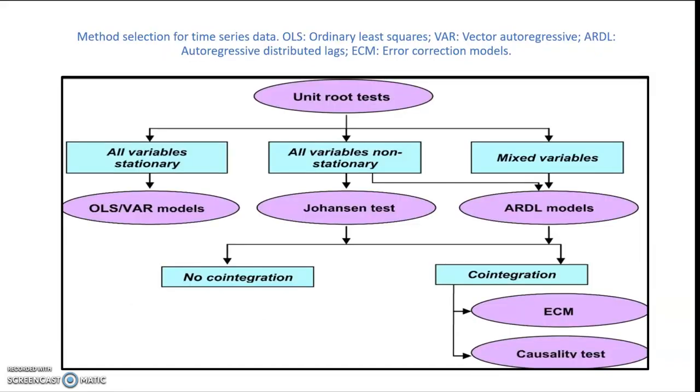In this slide you see that the starting point in time series analysis is checking unit root tests. If all variables are stationary at level we may use OLS. If all variables are not stationary at level but stationary at the first difference we may go for Johansen cointegration test.